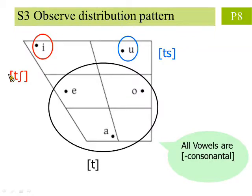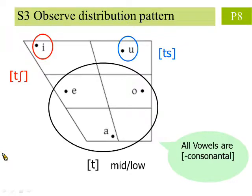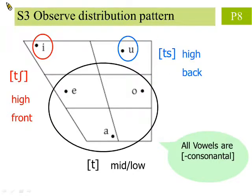In Step 3, we see that the vowels [a], [a], [o], which follow the consonant [t], are mid or low vowels. Meanwhile, [e], which follows the consonant [ch], is a high front vowel. And [u], which follows the consonant [ts], is a high back vowel. These five vowels are all non-consonantal. This should be obvious, since they are already vowels — they cannot possibly be consonants.